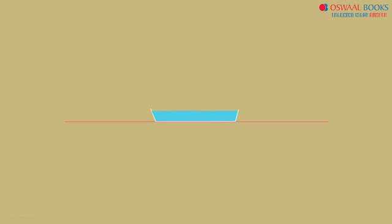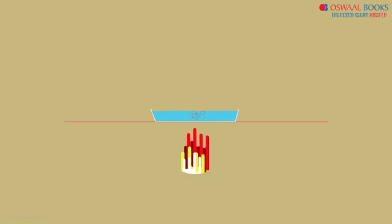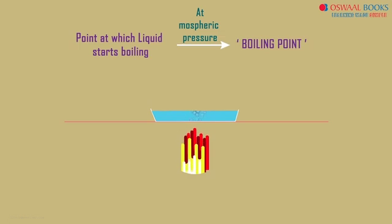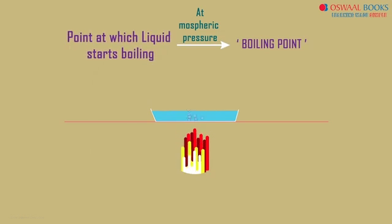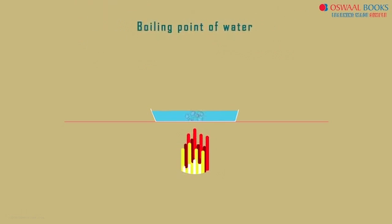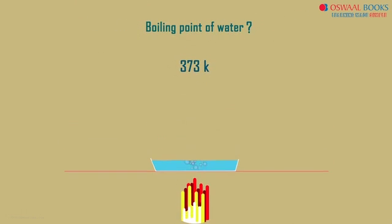Now, what happens when we continue to supply heat after the solid has melted? The liquid will start boiling after a certain amount of heat is absorbed. The point at which this liquid starts boiling at atmospheric pressure is called its boiling point. What do you think is the boiling point of water? It is 373 Kelvin.